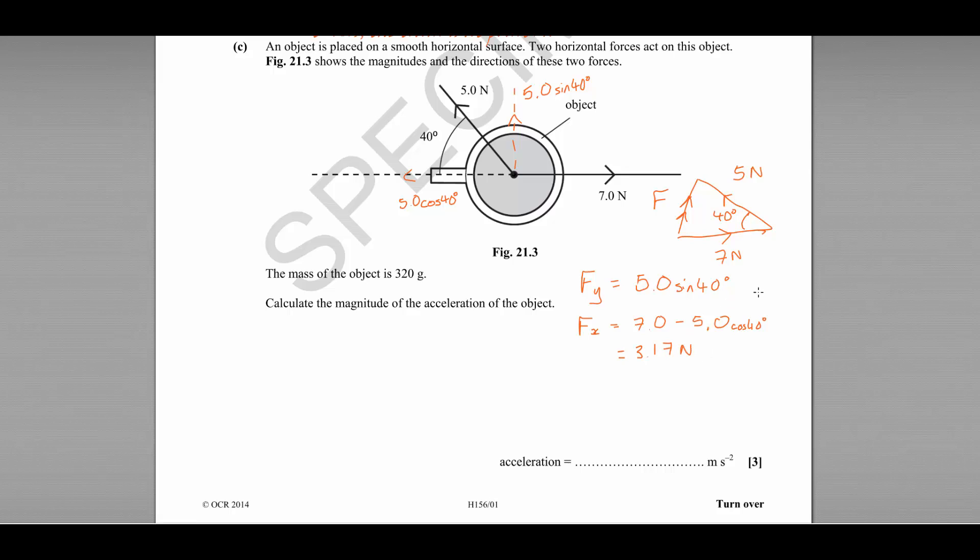Whereas Fy, 5 times sin 40, is 3.21 newtons. So now we have a force which we know to be acting with 3.21 newtons upwards and 3.17 newtons to the right horizontally.